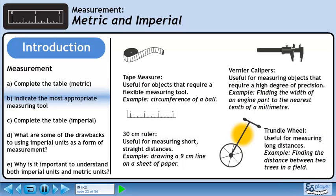A trundle wheel is useful for measuring long distances. We could use it to find the distance between two trees in a field.